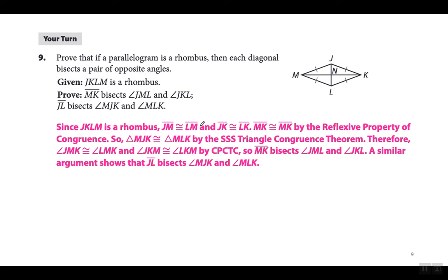En esta prueba enseñaron que los dos triángulos son congruentes por lado-lado-lado. A la vez que enseñaron eso, escogieron las partes correspondientes necesarias, diciendo que son congruentes por CPCTC. Estos dos ángulos son congruentes y forman una línea, así que son suplementarios. La suma da 180 y como son congruentes, cada ángulo mide 90 grados, así que JL es perpendicular a MK.